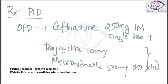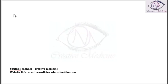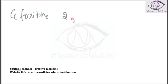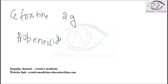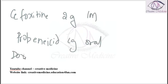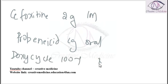The second regimen: we can give ceftriaxone 2g intramuscularly with probenecid 1g orally as a single dose, along with doxycycline 100 mg twice a day for 14 days, and metronidazole 500 mg twice a day for 14 days.